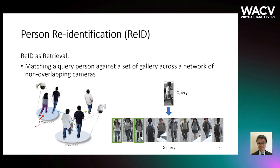Person re-identification can be regarded as an image retrieval problem whose objective is to match a person of interest across non-overlapping cameras. A successful person re-ID relies on building discriminative fine-grained representations, which allows us to compute similarity between query and gallery images. It can be applied to finding missing children and seniors in the real world.